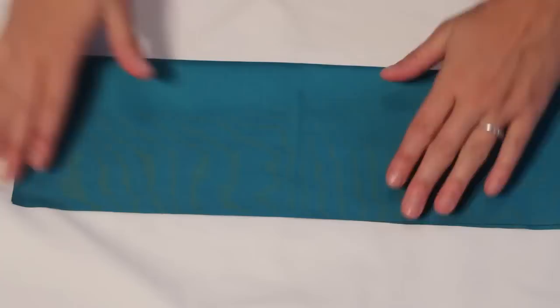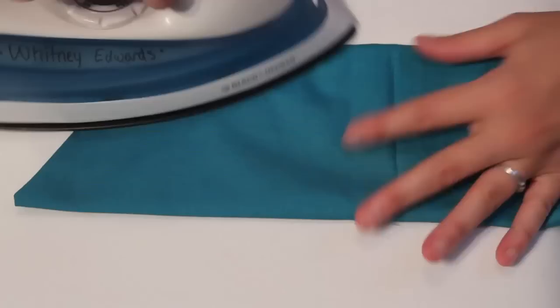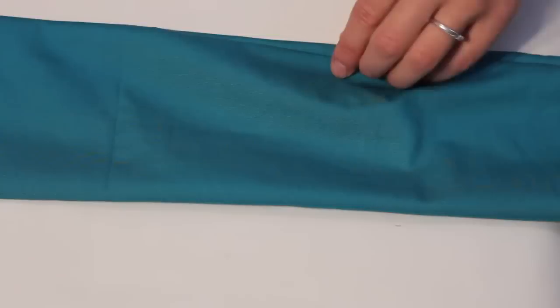Fold the ties in half right sides together and sew along the long edge and one short side. I decided to sew my ends at an angle. Trim and turn right side out. Iron both ties.